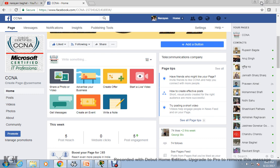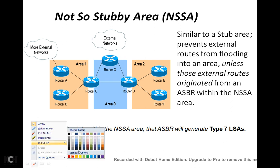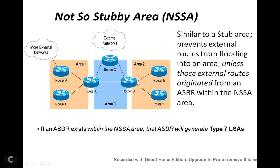I have a URL also, so I will tell you about all those things at the end. Let's begin this video — in this video we are going to learn about how to configure Not So Stubby Area, which is also known as NSSA. I have already uploaded one separate video about the types of OSPF areas: one is normal area or standard area, second is stubby area, and third is not so stubby area.